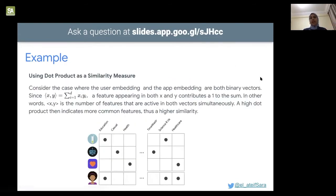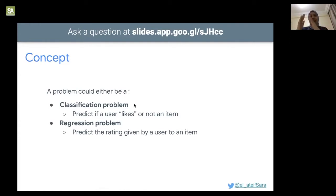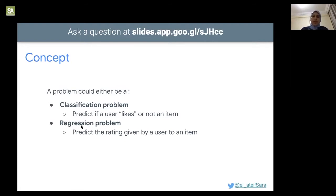In content-based problems, we either use the classical similarity approach or frame it as a machine learning problem. It could be a classification problem — predicting whether a user likes or dislikes an item — using algorithms like logistic regression. Or it could be a regression problem — predicting the rating a user might give an item — using linear regression, for example.